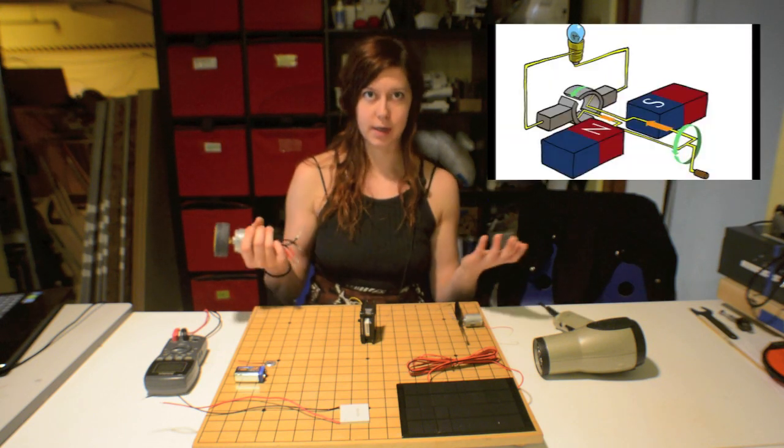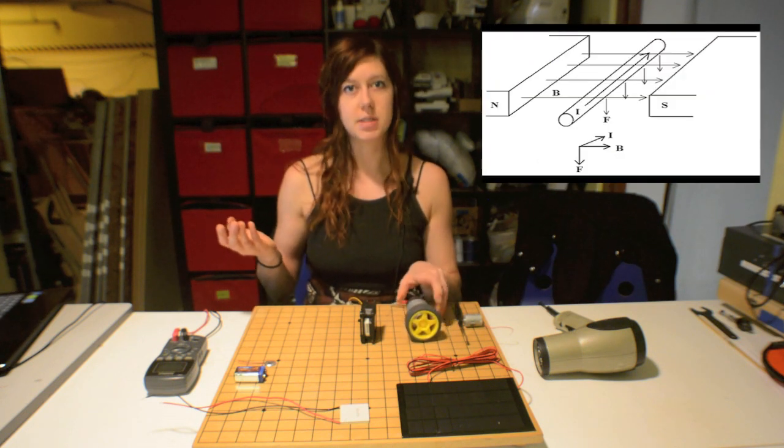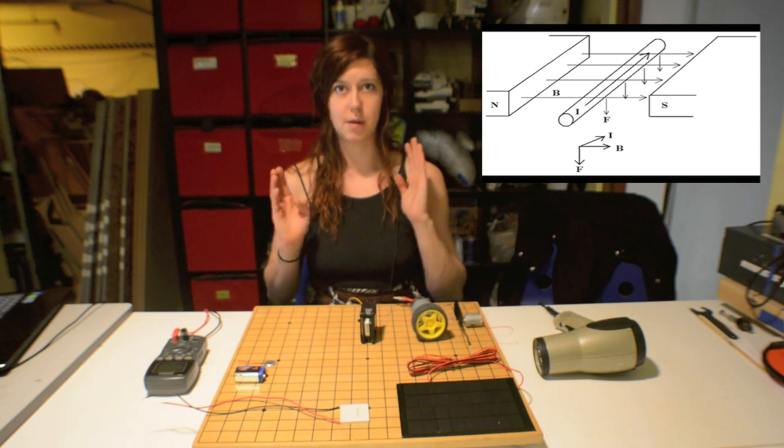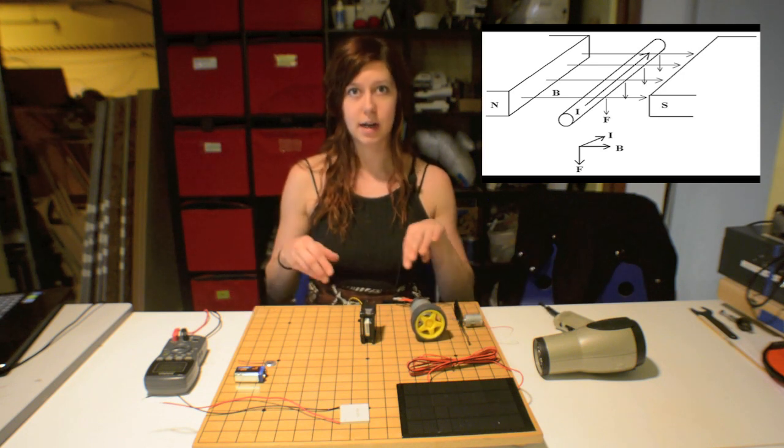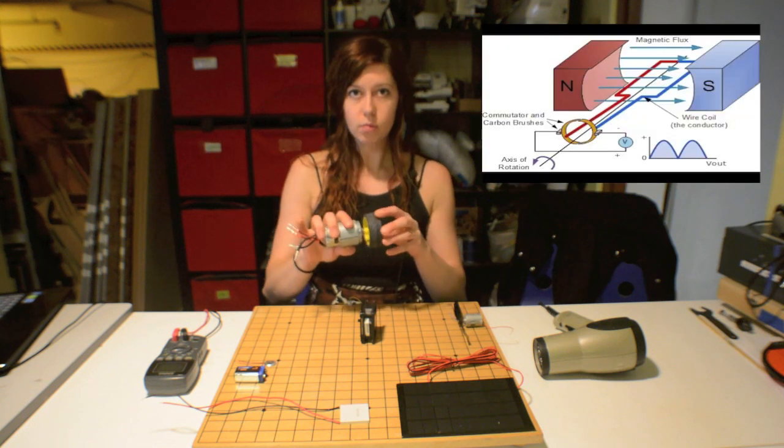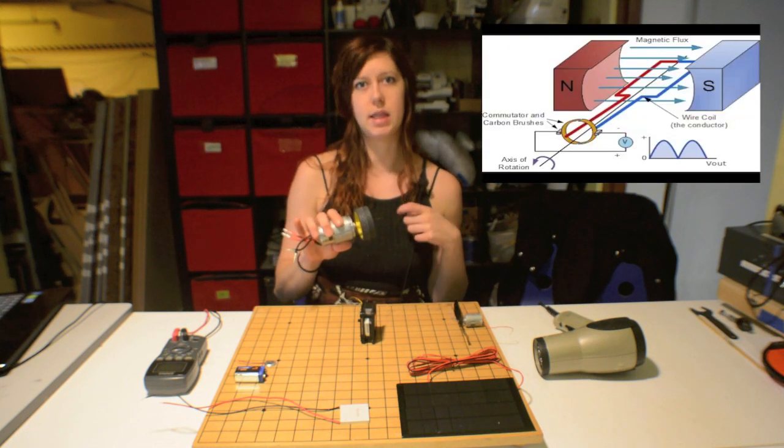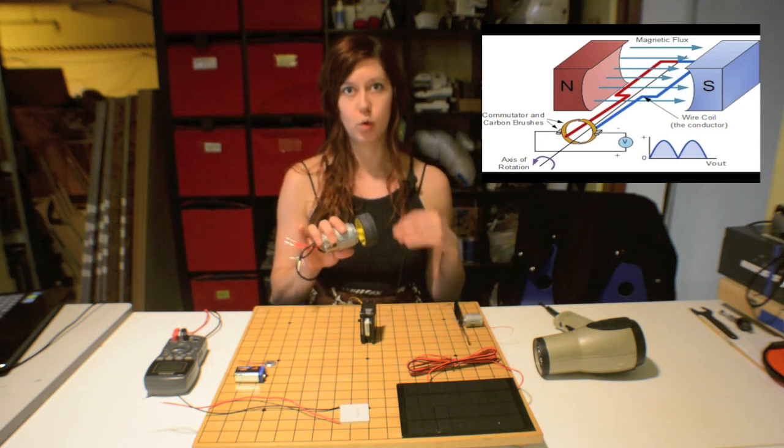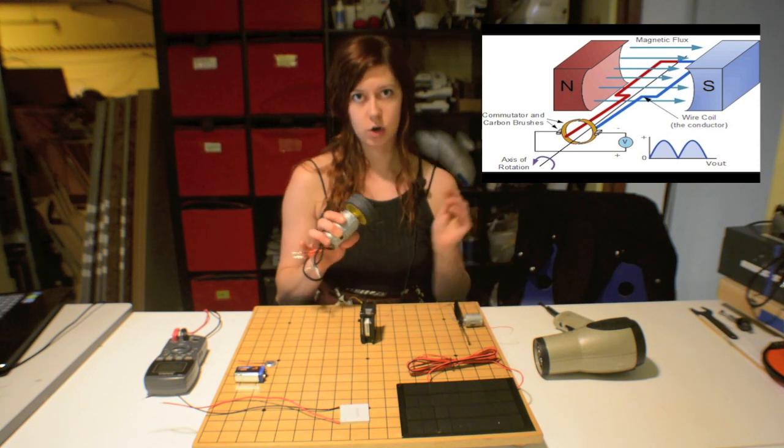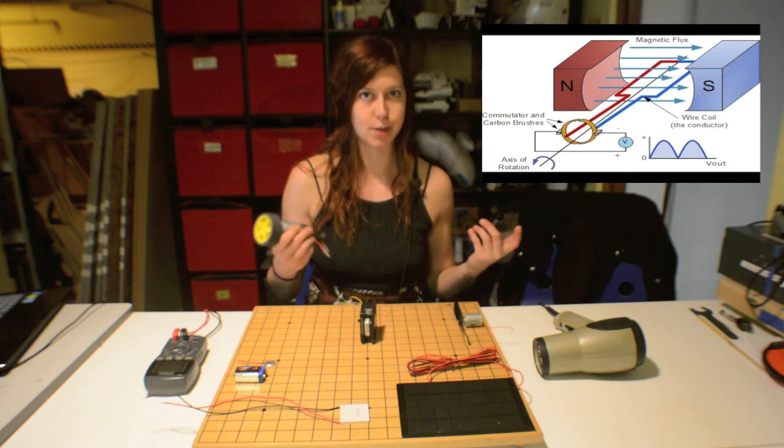And so, as you might expect, the way that this is done is using the Lorentz force. Basically, that a moving electric field generates a magnetic field, and a moving magnetic field generates an electric field. So, in the case of a generator, we're taking a magnetic field, and we're moving a conductor within that magnetic field, and that movement causes a current in the conductor, and that current will be collected on the brushes of the motor, and then you can use it to do some work.